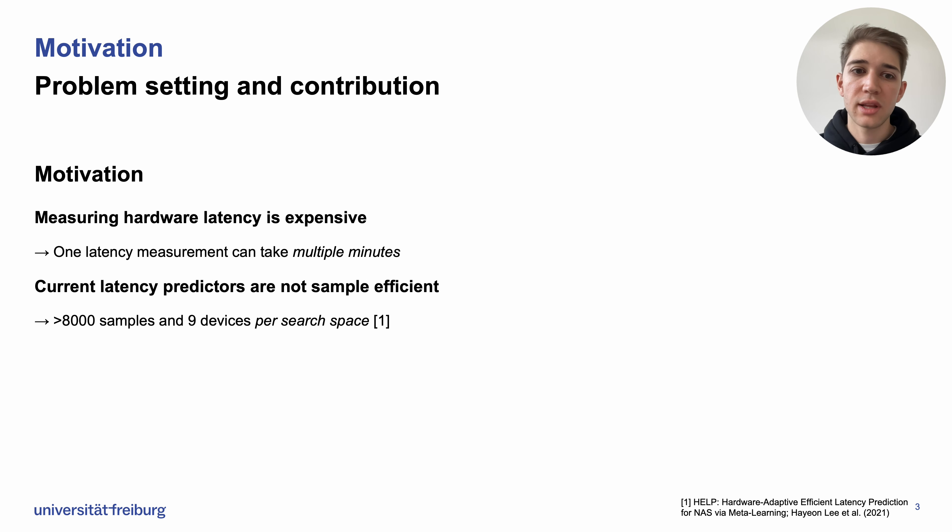Another problem is that current latency predictors are not very sample efficient. For example, HELP, which is the current state of the art, takes more than 8,000 samples across a set of nine hardware devices to train accurate predictors for one search space. This is not really feasible to do if you switch search spaces or generally to collect these latency samples.